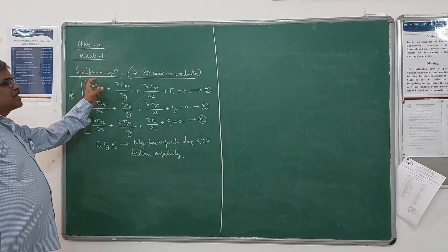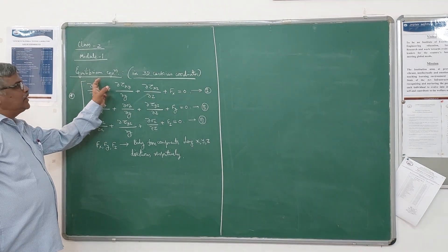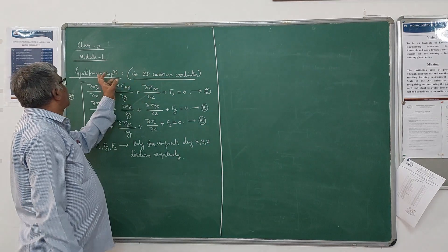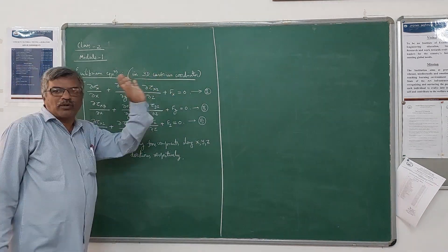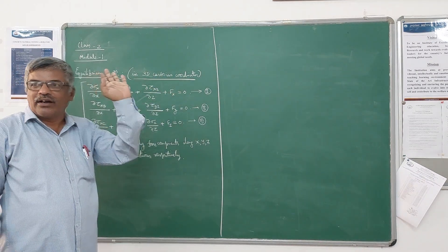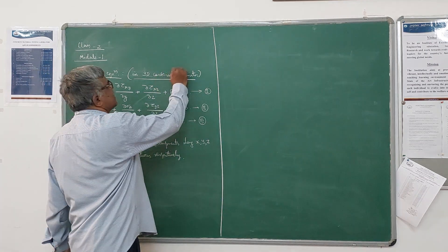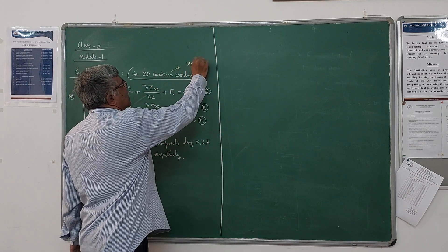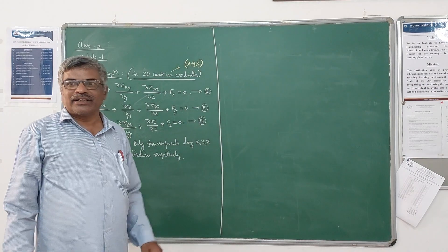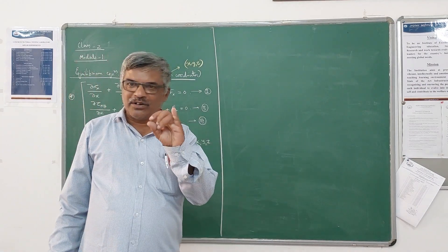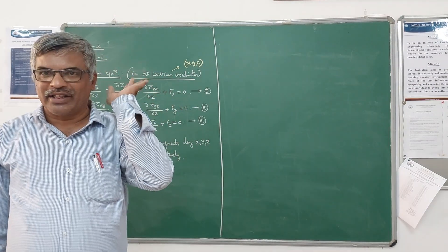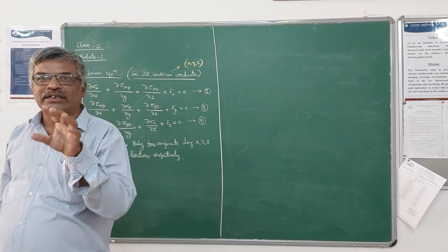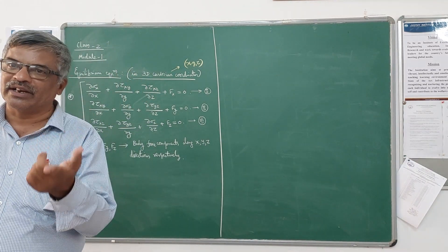In this class we will discuss about the three dimensional equilibrium equations in Cartesian coordinates. Cartesian coordinates are XYZ. There are three types of coordinates: Cartesian, cylindrical, and spherical. Three dimensional Cartesian, and two dimensional polar coordinates.